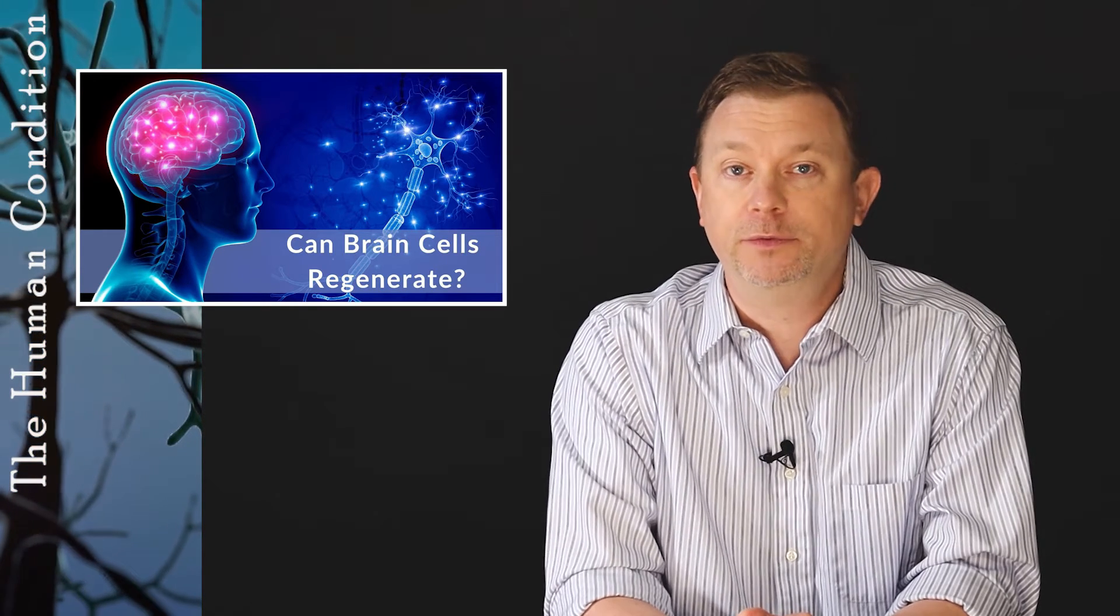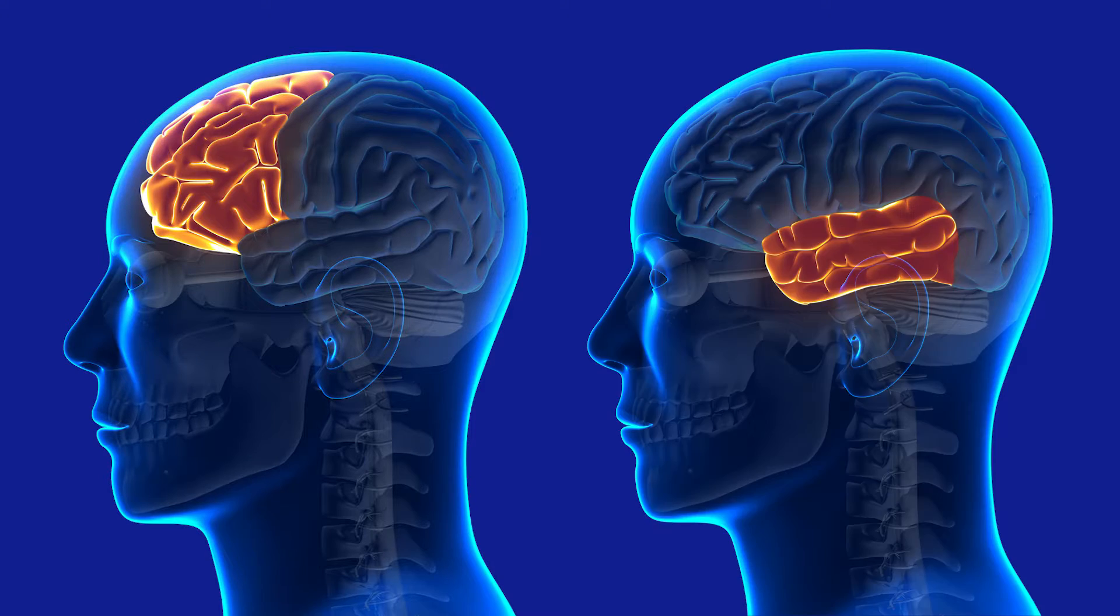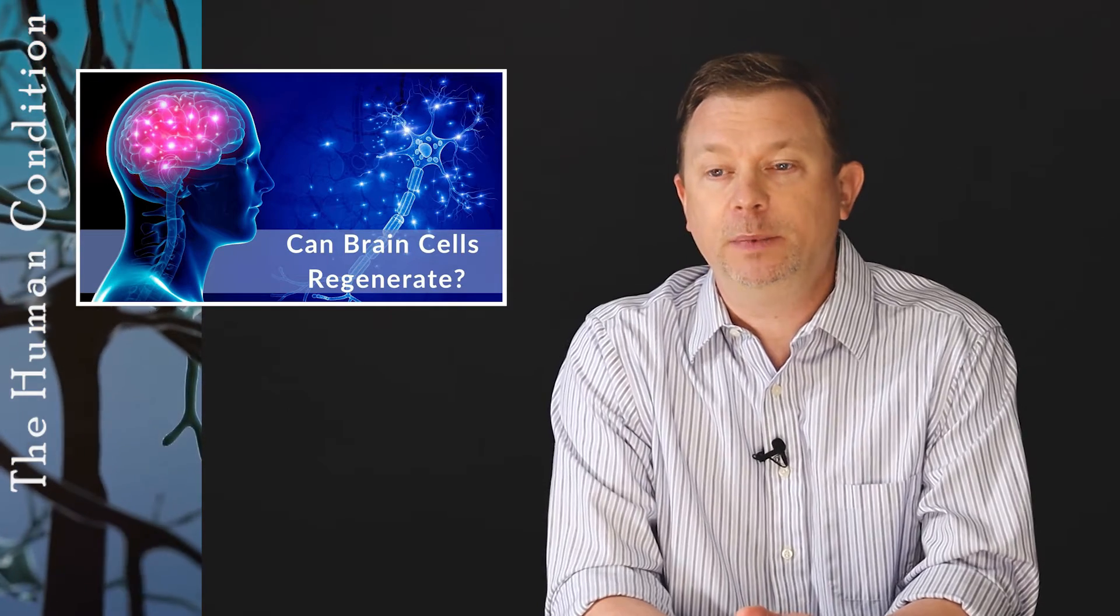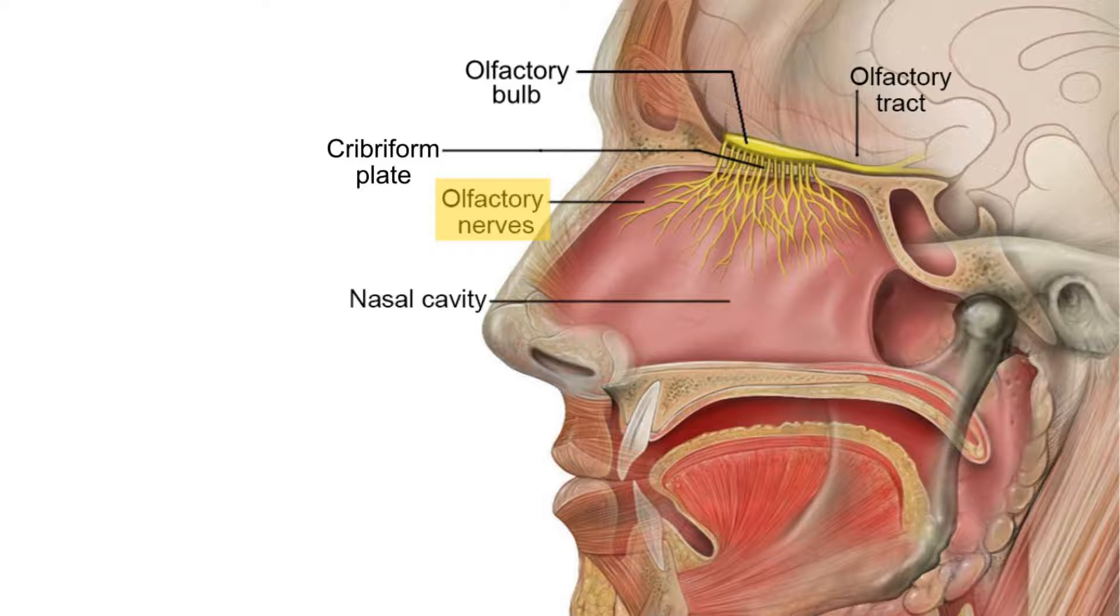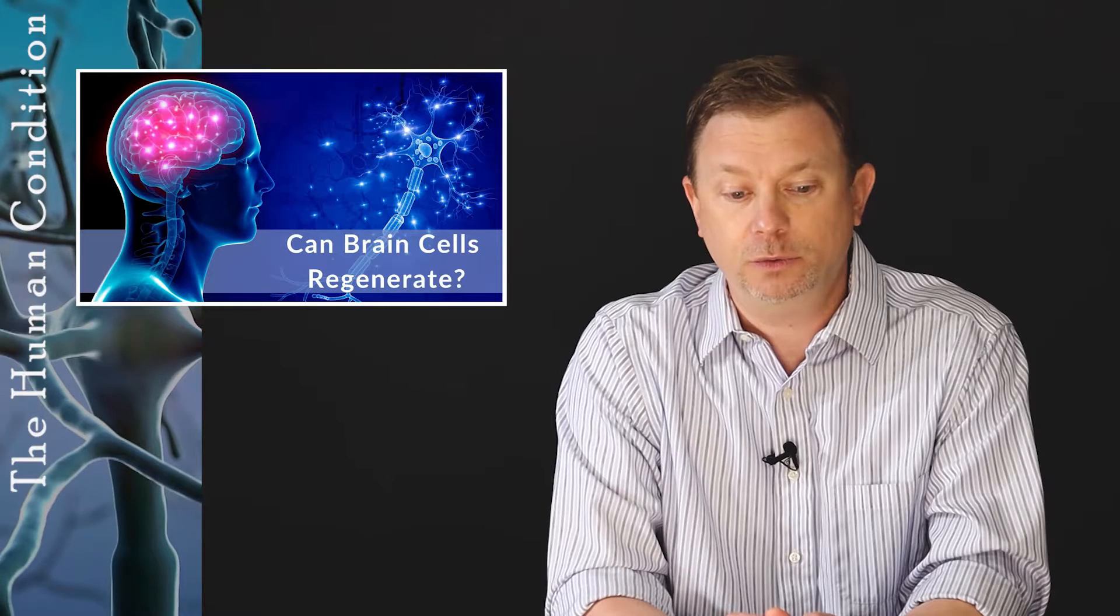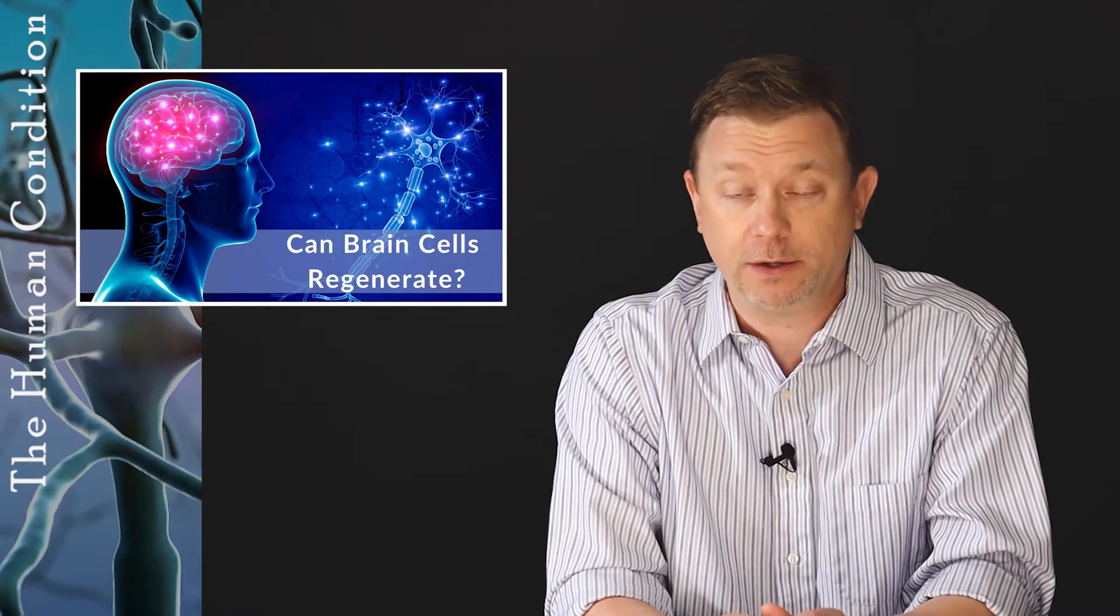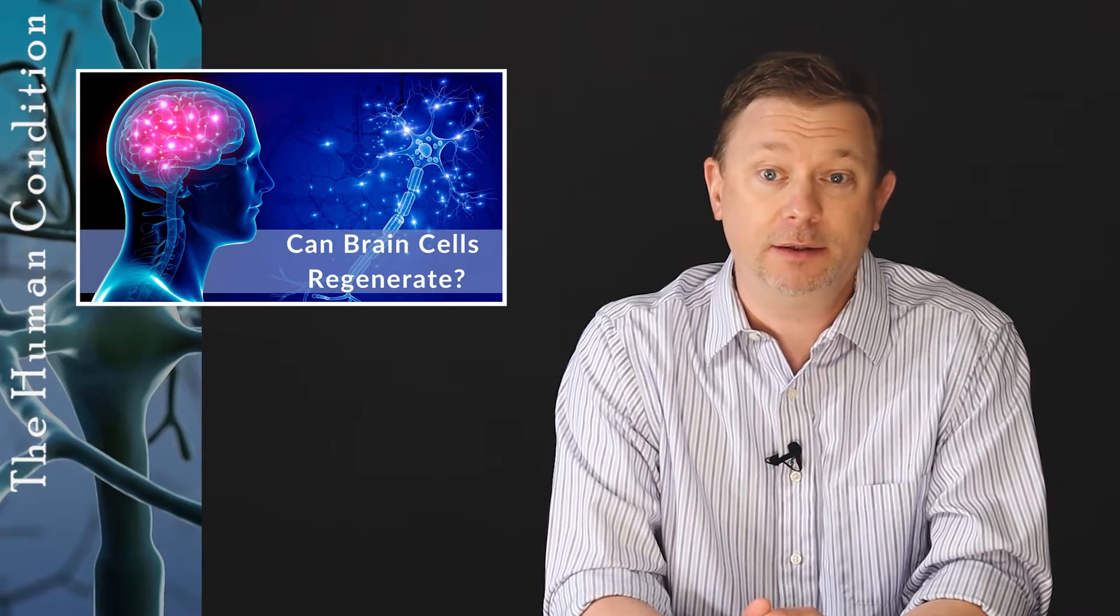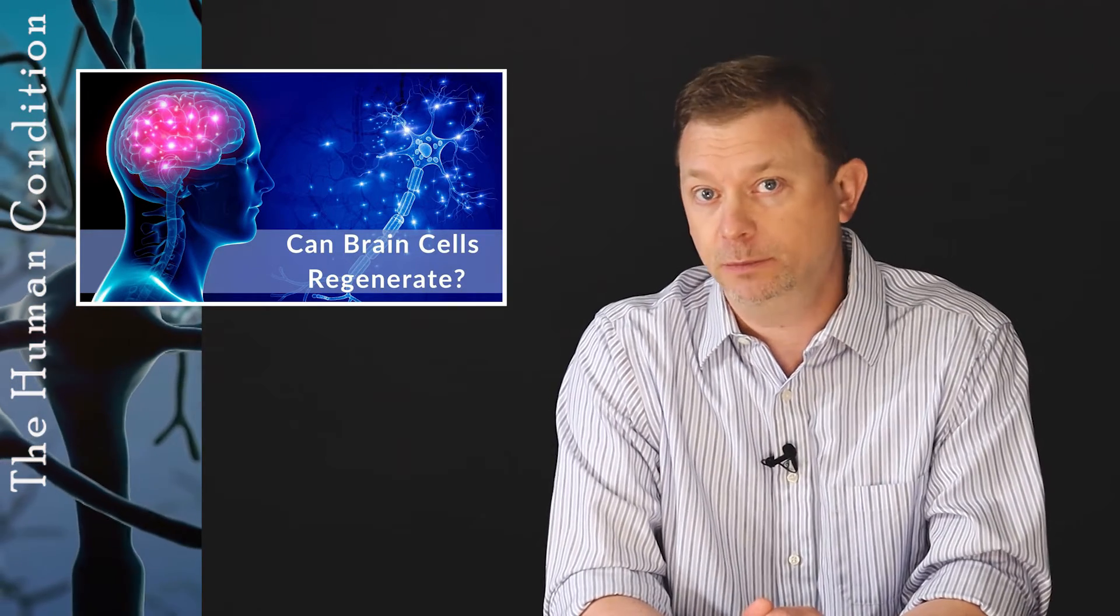There's also a group of neurons in the frontal and temporal lobes that are connected to the olfactory system, or the smell system. When you smell, you have information that goes in through the first cranial nerve, your olfactory nerve, and that nerve goes up into your frontal lobes, into your temporal lobes, on both sides, and you actually can make new neurons throughout your life with regard to some of these smell neurons. Again, it's not a lot of turnover, but we do make some new neurons.